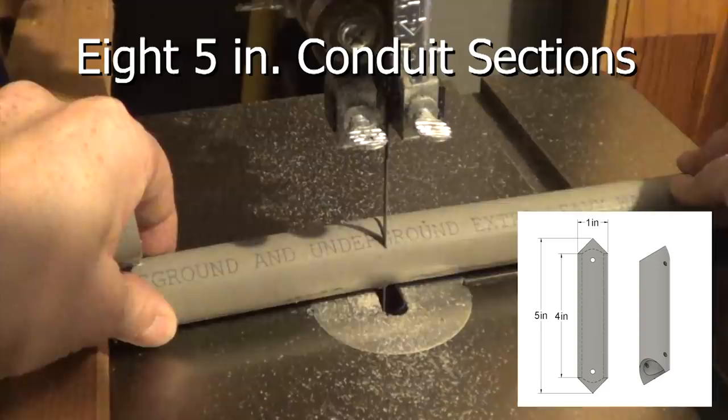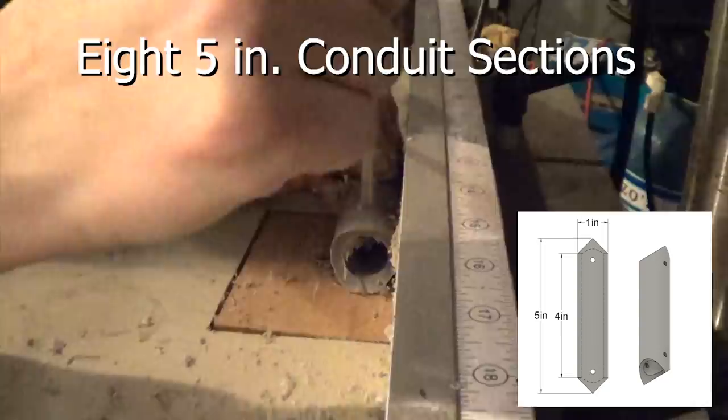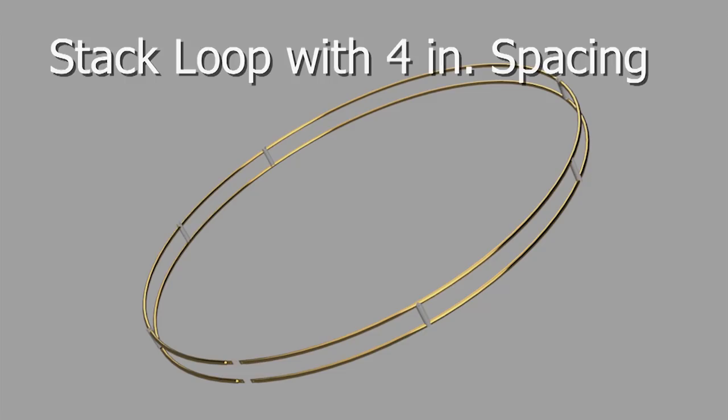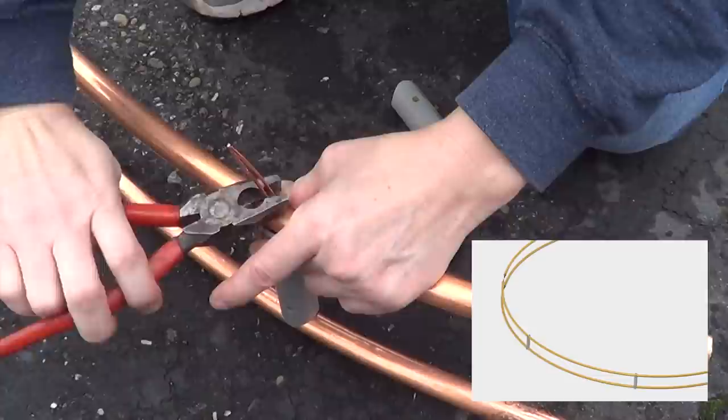You'll be creating a spiral out of the two loops, so you need to space them about four inches apart with conduit sections. Next, you'll be stacking the two copper loops together. Use the four-inch spacers and some household copper wiring to attach the two loops. This will be a little awkward because things will be flopping around quite a bit, but once it's hanging on the frame, things will become much more rigid.